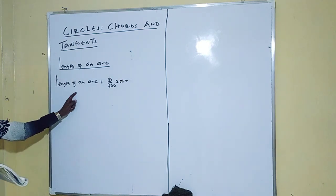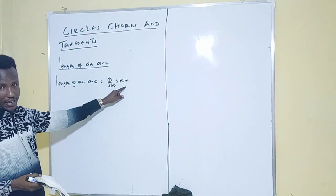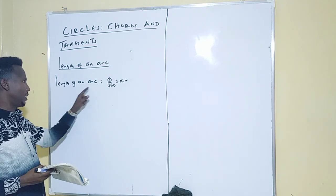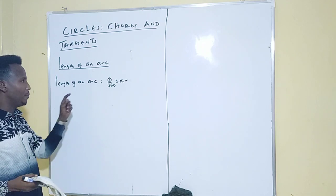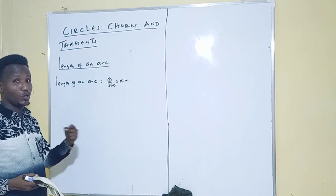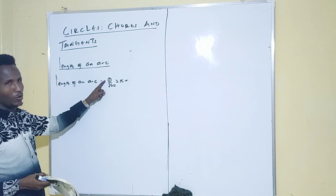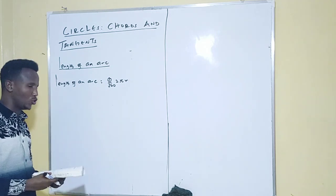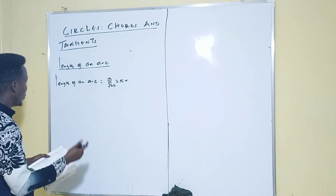In the examination room you can be asked to find theta or r as well. The length of an arc is given by theta over 360 times 2πr. In every formula in mathematics we have constants and variables — theta and r are the variables that can be asked during national exams. We must know how to get theta and r, and I will derive the formulas for you.